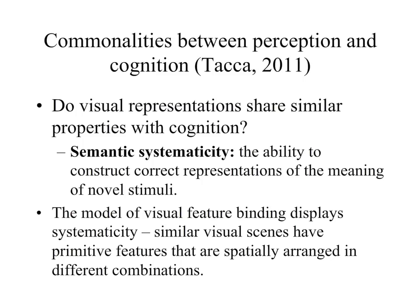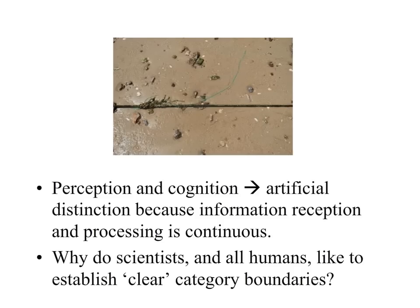One cognitive property explored is semantic systematicity — the ability to construct correct representations of the meaning of novel stimuli. The author argues that a model of visual feature binding displays this property: similar visual scenes have primitive features that are spatially arranged in different combinations, yet we can construct the meaning of novel visual stimuli despite those differing spatial arrangements. So the distinction between perception and cognition appears very blurry — largely an artificial distinction based on the fact that information reception and cognitive processing is a continuous activity. This begs the question of why scientists and humans like to establish clear category boundaries, which we'll address as we explore higher-level cognition.